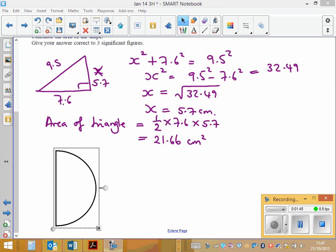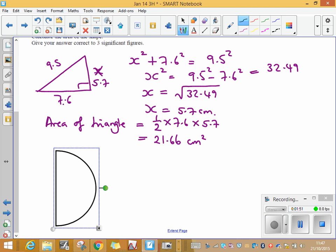Now I've found the area of the triangle I need to find the area of this semicircle where this length is 5.7 centimetres. Now if I want to work out the area of a circle, the formula for the area of the circle is given to you in the front of the paper: A equals pi r squared. This is a semicircle though so the area in this case is going to be pi r squared divided by 2.